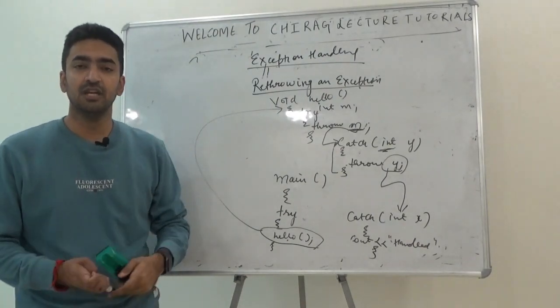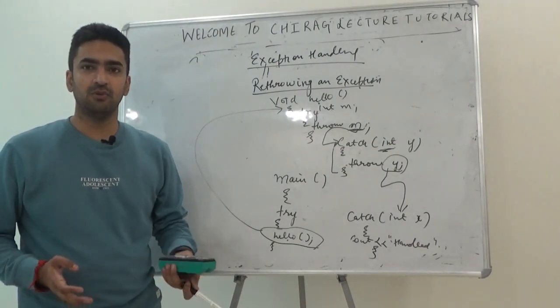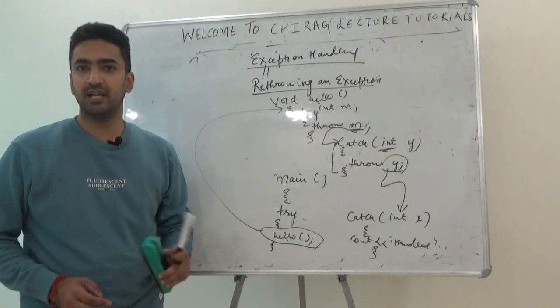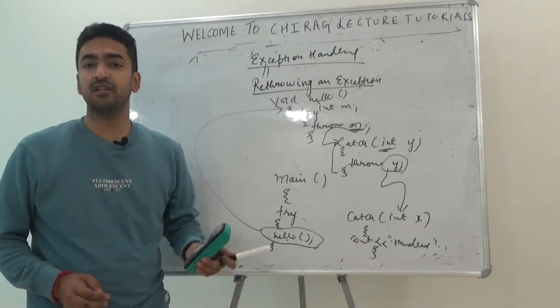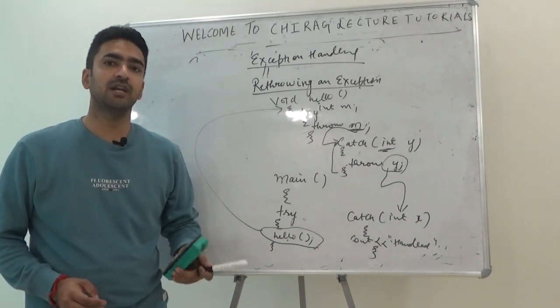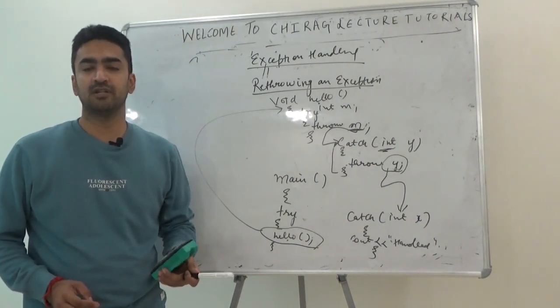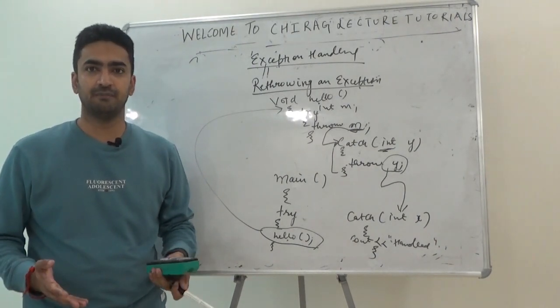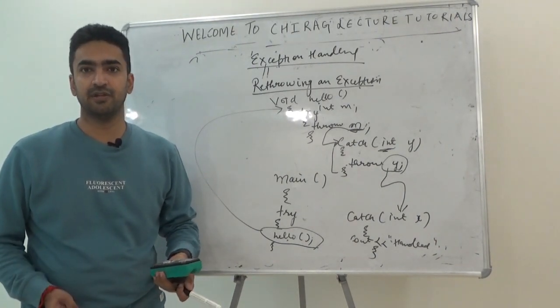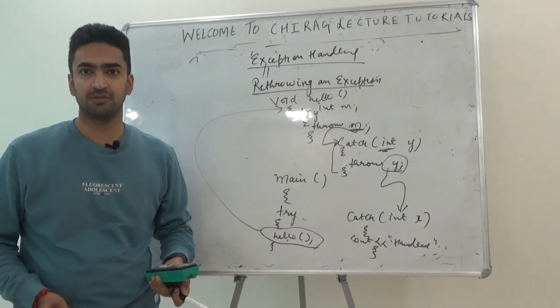From one catch block we went to another catch block to check whether the exception could be handled — and yes, it was handled. This is known as re-throwing an exception. If you like this video, kindly like, share, and subscribe. If there is any doubt, post it in the comment box. Thank you very much for your support.